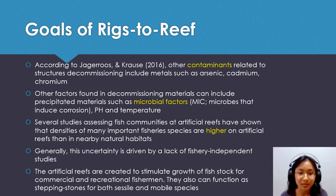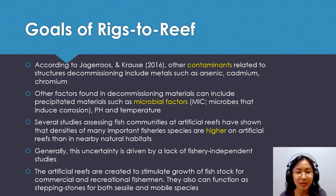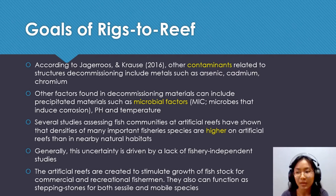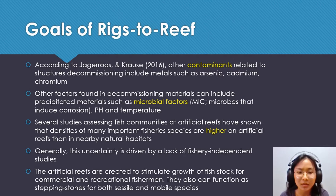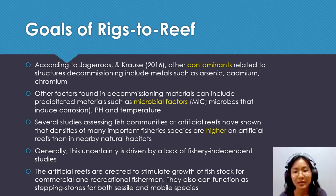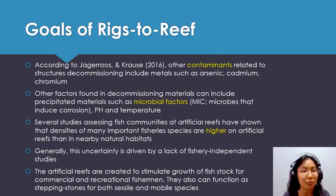Several studies assessing fish communities at artificial reefs have shown that the density of many important fishery species is higher on artificial reefs compared with nearby natural habitat. However, this observation is still limited due to a lack of fishery-independent studies. Artificial reefs are created to stimulate the growth of fish stocks for commercial and recreational fishermen purposes, and can also function as stepping stones for both sessile and mobile species.